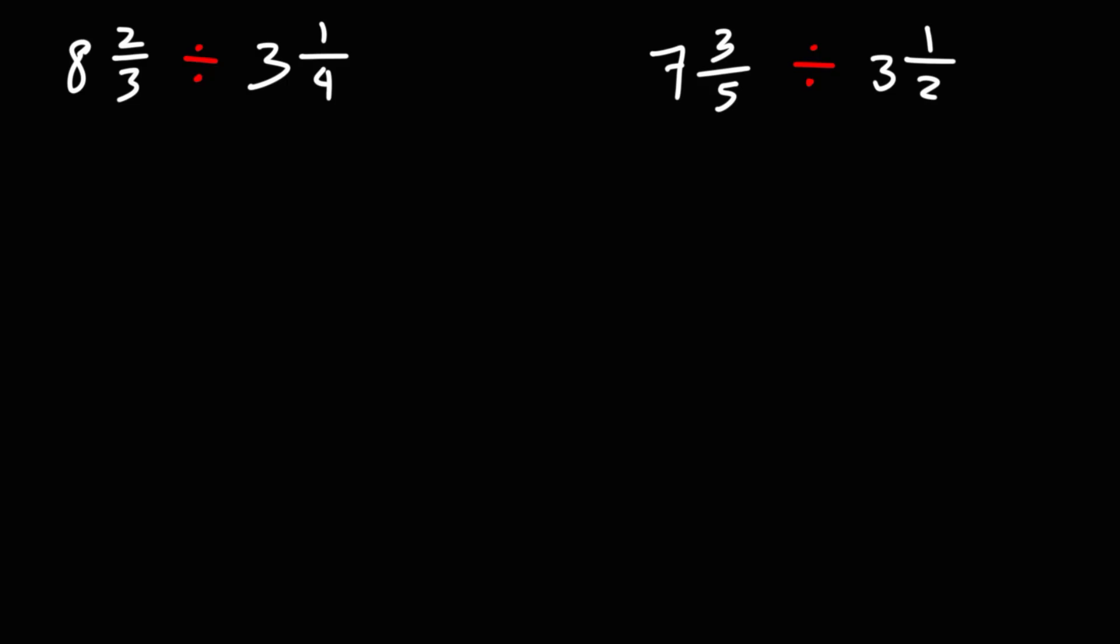So what's 8 and 2 thirds as an improper fraction? To convert it, first we need to rewrite the denominator which is 3. Next we're going to find the numerator by multiplying 8 and 3 and then we're going to add 2. So 8 times 3 is 24 plus 2 is 26. So 8 and 2 thirds is 26 over 3 as an improper fraction.